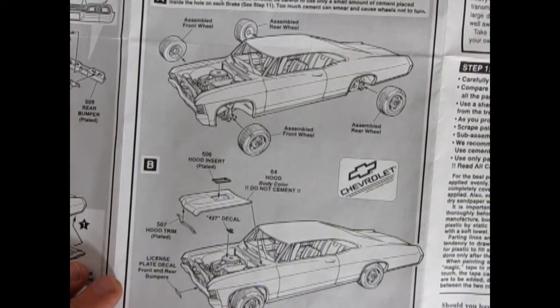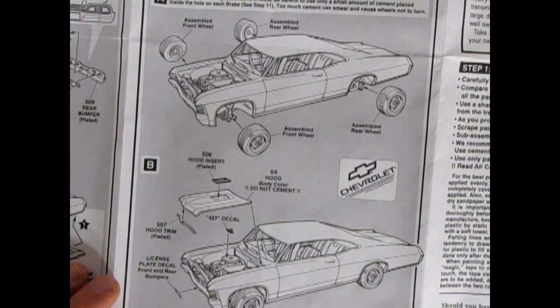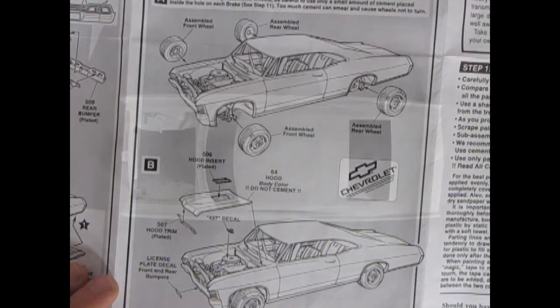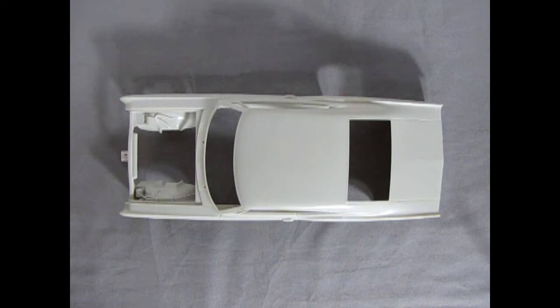So overall, a really nice instruction sheet. And now let's go down and look at the great components. Now we're going to look at the body of our 1967 Chevrolet Impala Super Sport.